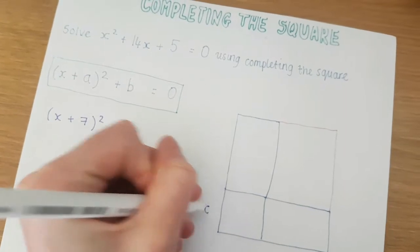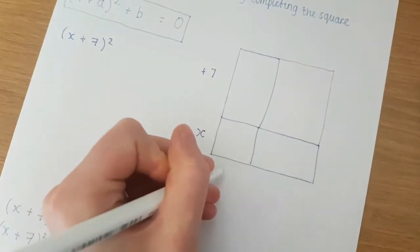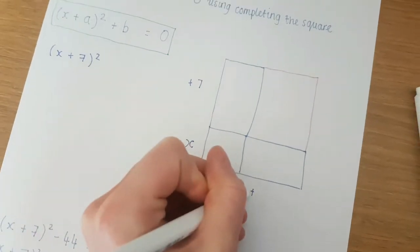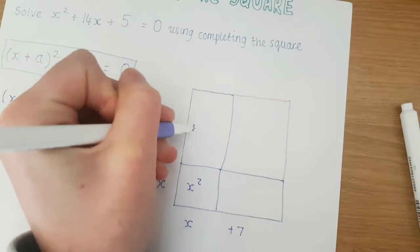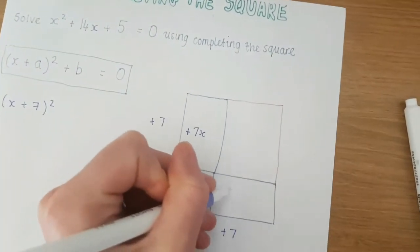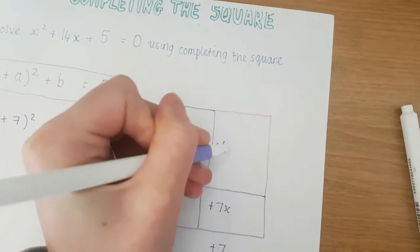If I'm to put this into my box here and say this is x + 7 and obviously if I'm squaring it it's multiplied by itself so x + 7. What I actually get is x² + 7x here plus another 7x here and 7 multiplied by 7 is going to be +49.